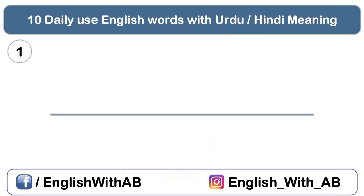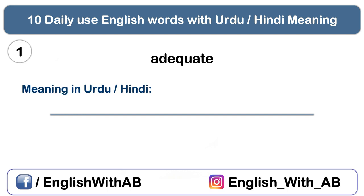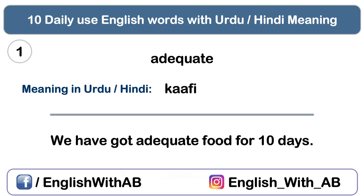On number one we have 'adequate'. Its Urdu meaning is 'kafi' — enough for a specific need. When we have as much of something as we need, we can use this word. Its synonym is 'enough'. For example: We have got adequate food for 10 days, meaning we have enough food for 10 days.